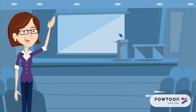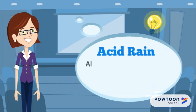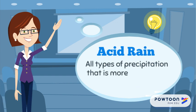Now, let's have a look at the definition of acid rain. Acid rain involves all types of precipitation that is more acidic than normal water.